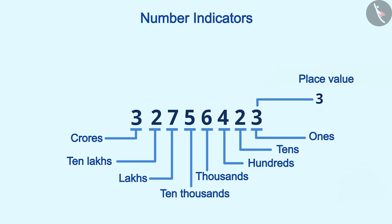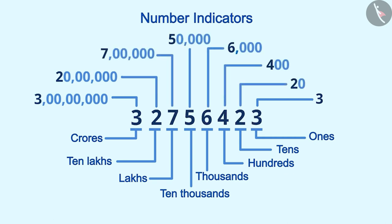Since this three is at crore's place, its place value will be 3 crores. Place value of two will be 20 lakhs. Similarly, the place values of remaining digits can be written like this.